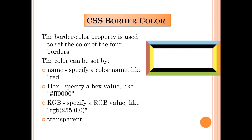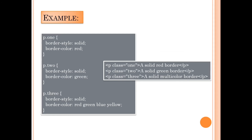Now, the CSS border-color property is used to set the color of the four borders. The color can be set by name (like 'red'), by hex value (like #ff0000), by RGB (like rgb(255,0,0)), or as transparent using RGBA or HSL. The border-color property can have from 1 to 4 values. If the border color is not set, it inherits the color of the element.